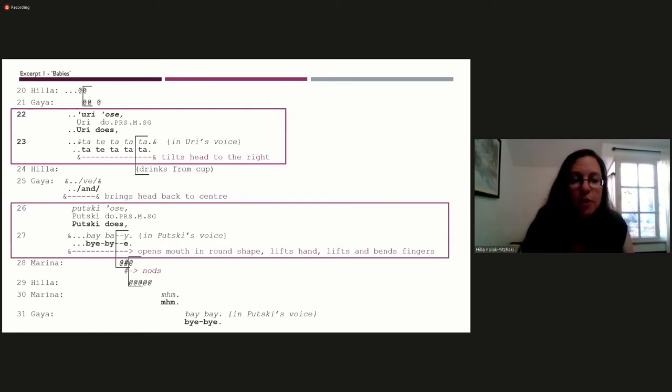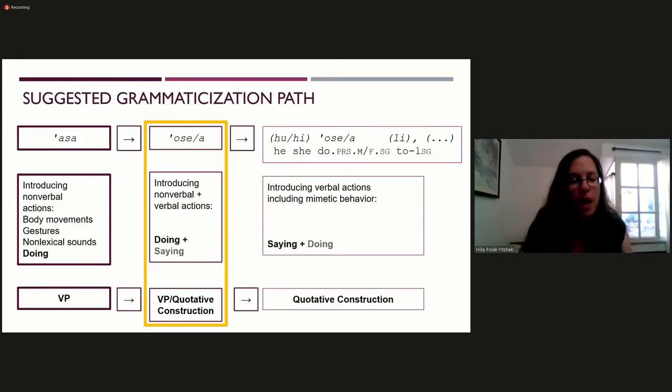At this point, Gaia takes the turn and clarifies that there is a difference between the vocal behavior of the two babies, Uri and Putski. Uri, Marina's baby, is the one who tends to produce non-lexical sounds similar to the sounds Marina employed, Tata. Whereas Putski, Gaia's baby, tends to employ a gesture of waving his hand accompanying the lexical utterance bye-bye. Let's focus first on the way the non-lexical utterance is introduced. The present tense form of the verb asa, do, is employed for this purpose, ose. It indicates an habitual action characterizing the way Uri talks. In Hebrew, it is possible to employ the verb asa not only to introduce gestures or non-lexical sounds, but also to introduce gestures accompanying lexical utterances. I consider this a further involvement towards the possibility of asa to introduce speech and not just sounds and gestures.